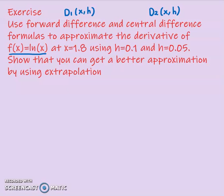Now, let's say the question didn't mention extrapolation explicitly. The question says: show how you can get a better approximation. If you see the question gives two different h values, then you know the better approximation can be obtained by using extrapolation. In this case it's straightforward. We are given f(x) = ln(x).